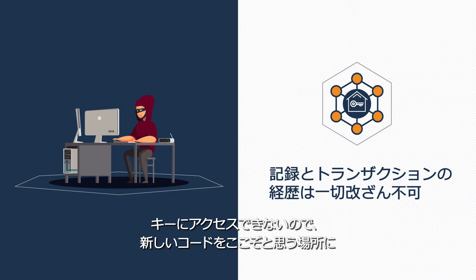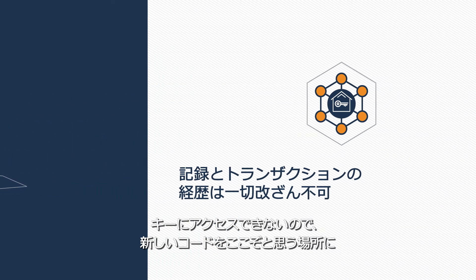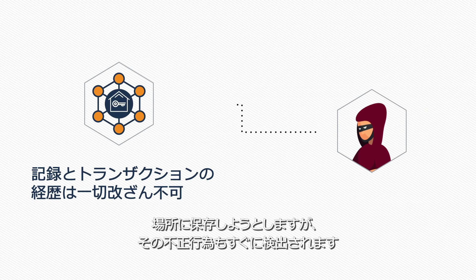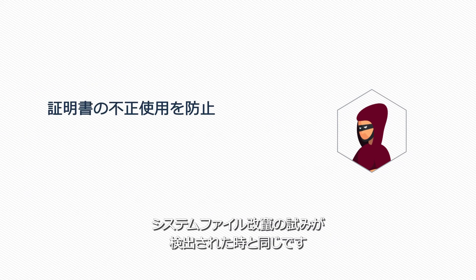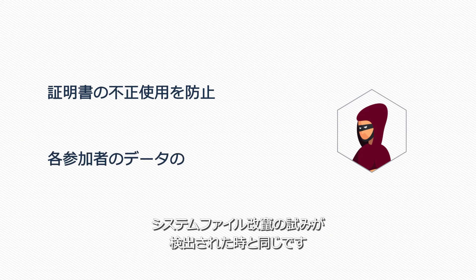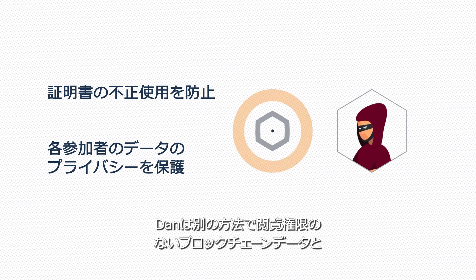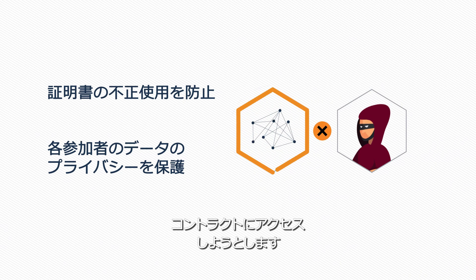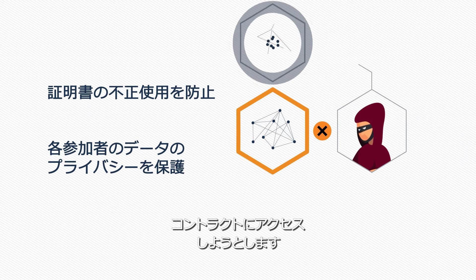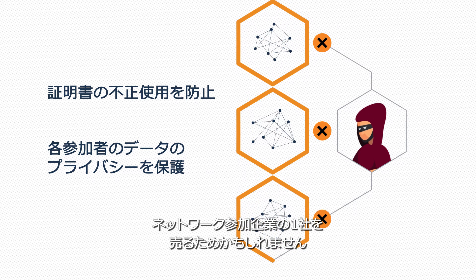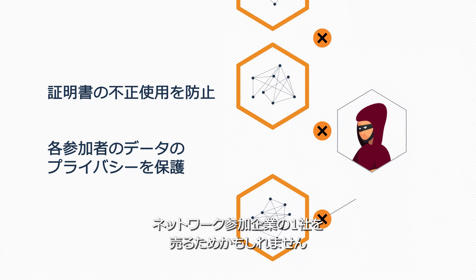Without access to the key, he can try to guess where to store the new code, but that tampering would immediately be detected, the same way his attempt to alter system files was detected. Taking a different approach, he decides to access blockchain data and contracts that he's not authorized to see, perhaps to sell to one of the network participants for a competitive advantage.